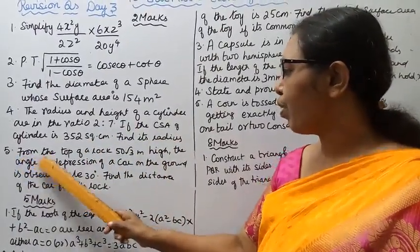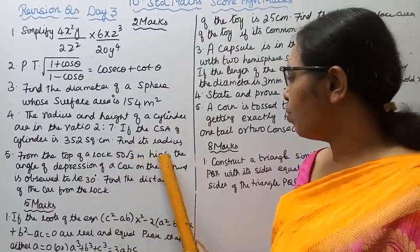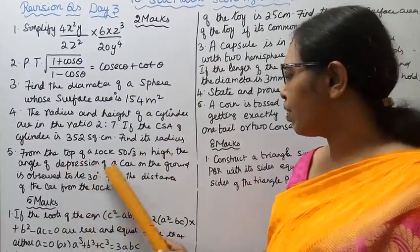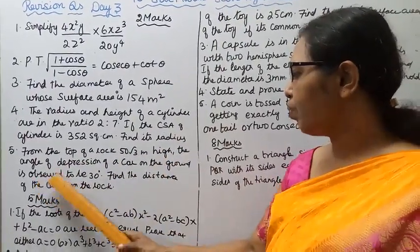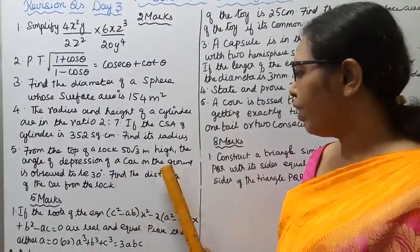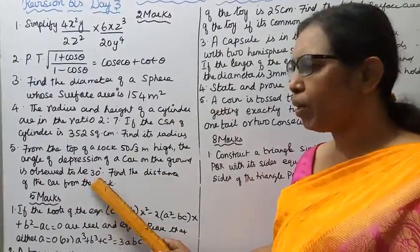Fifth, from the top of a rock 50√3 meters high, the angle of depression of a car on the ground is observed to be 30 degrees. Find the distance of the car from the rock.